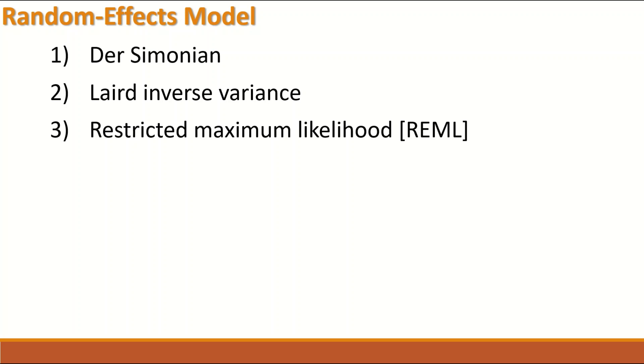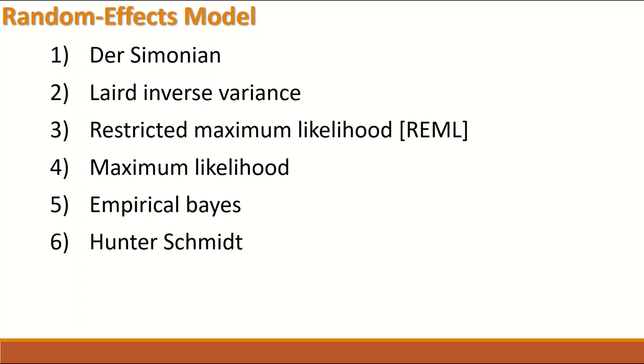Random effects models that are in common use include, but not all, the DerSimonian-Laird, the inverse variance, the restricted maximum likelihood, the maximum likelihood, the empirical Bayes, and the Hunter-Schmidt. Any of these options can be selected when performing meta-analysis and choosing a random effects model.